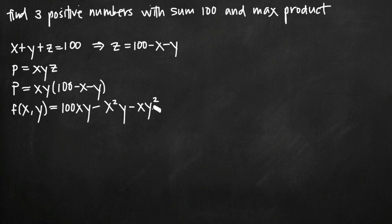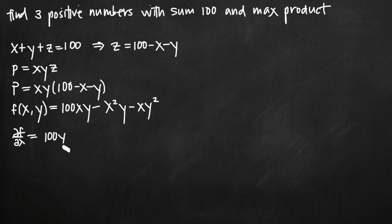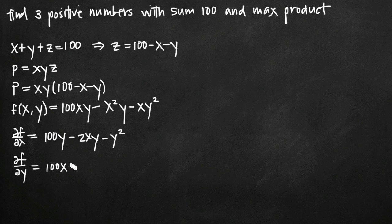Now, essentially we're dealing with a multivariable optimization problem. If you remember from single variable optimization problems, once we set up the equation to maximize, we needed to take the derivative. Well, in this case, since we have a multivariable function, we're going to take partial derivatives. So we'll take the partial derivative of f with respect to x, which gives us 100y minus 2xy minus y squared. Taking the partial derivative of f with respect to y gives us 100x minus x squared minus 2xy.